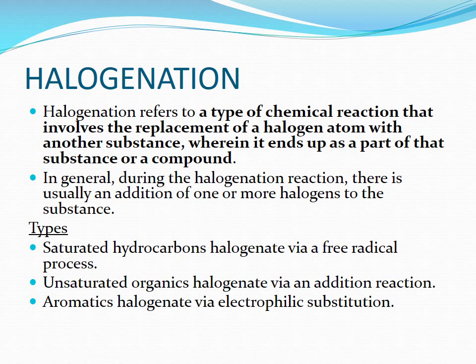Halogenation refers to a type of chemical reaction that involves the replacement of a hydrogen atom with a halogen, where it ends up as part of that substance or compound in general. During the halogenation reaction, there is usually an addition of one or more halogens to the substance. Halogenation types: saturated hydrocarbons halogenate via free radical process; unsaturated organic compounds halogenate via addition reactions; aromatic compounds halogenate via electrophilic substitution reaction.